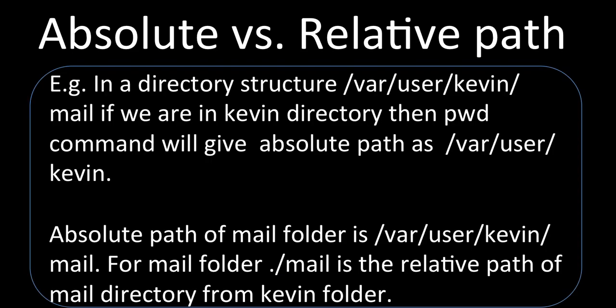Let's understand with an example. If we have a directory structure `/var/user/kavin/mail`, the forward slash is the root directory, then we have `var`, then `user`, then `kavin`, then `mail`. If we are in the `kavin` directory and run `pwd`, we will get the absolute path as `/var/user/kavin`. That is our present working directory and that is the absolute path.